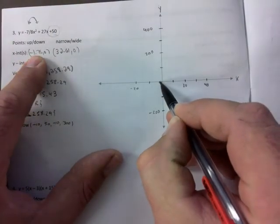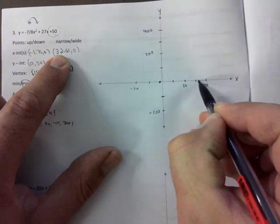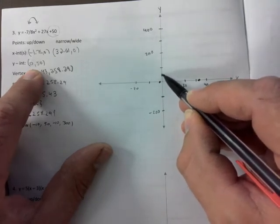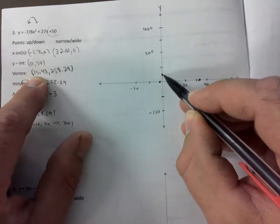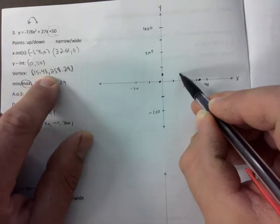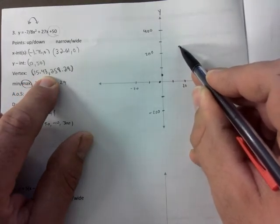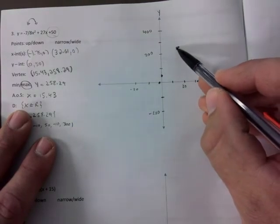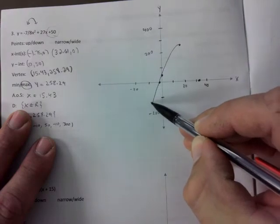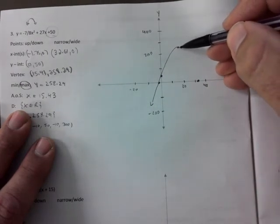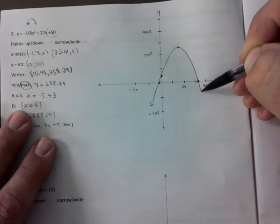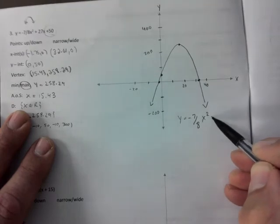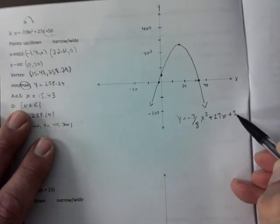And now you plot your points. So negative 1.75 is right about there. 32.61 is right about there. Y-intercept is 0.50. So that would be right about there. Between 0 and 100, right? And then the vertex is 15. 15 is right about there. All the way to 258, which is right about there. And now you just curve out and down. Go through it. And arrowheads. Okay? Same thing on the other side. You want to try to make it as symmetric as possible. Like so. And then you just make sure you include your equation.